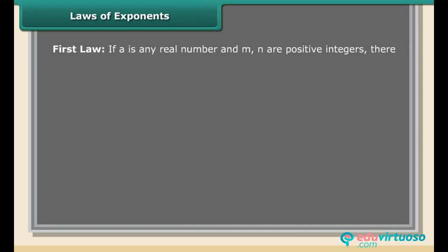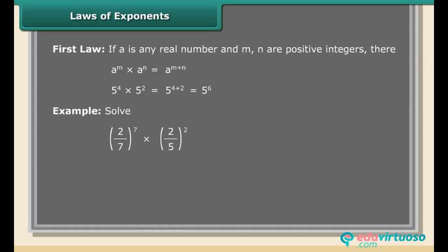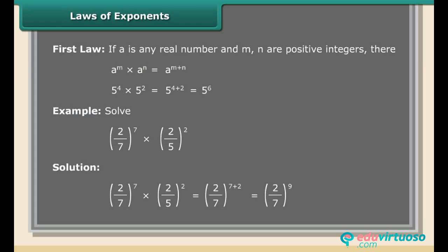First Law: If A is any real number and M, N are positive integers, then A raised to the power M multiplied by A raised to the power N equals A raised to the power M plus N. Example: 5⁴ × 5² = 5^(4+2) = 5⁶. Example: (2/7)⁷ × (2/7)² = (2/7)^(7+2) = (2/7)⁹.